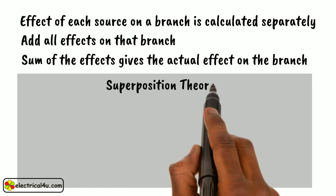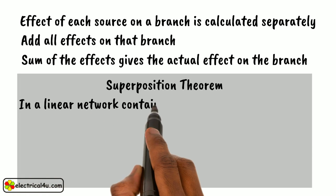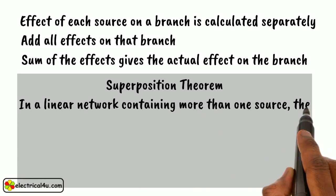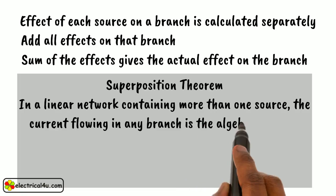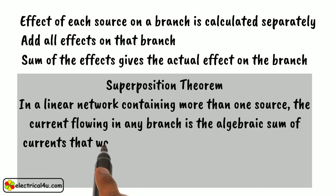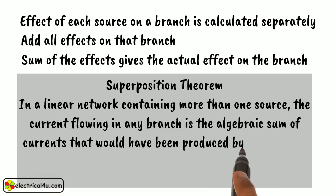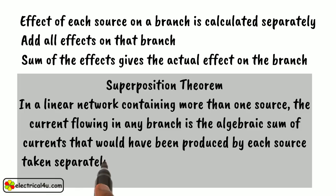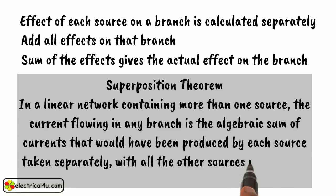The Superposition Theorem states that in a linear network containing more than one source, the current flowing in any branch is the algebraic sum of currents that would have been produced by each source taken separately, with all other sources replaced by their respective internal resistances.